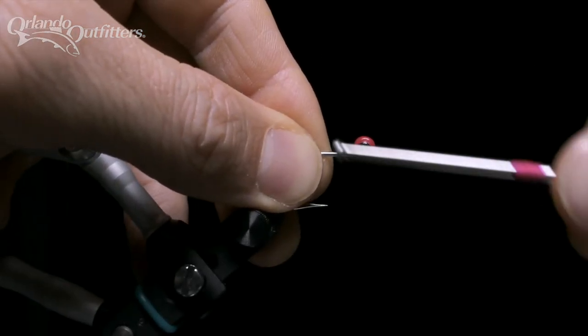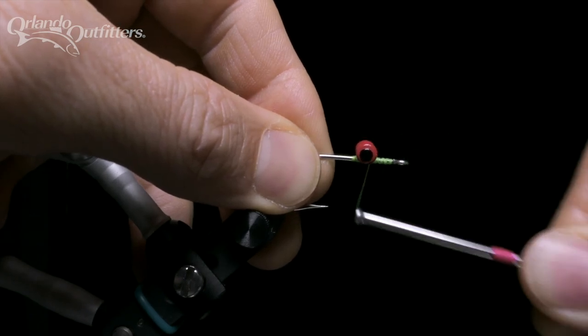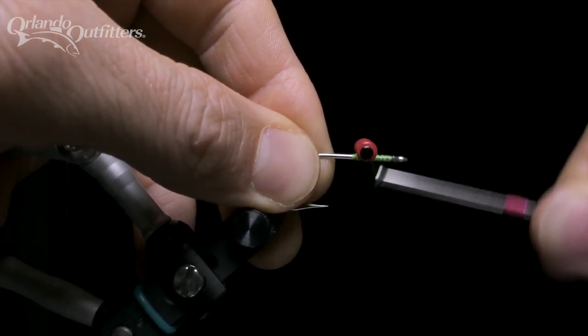I'll do a quick locking wrap and then I'll wrap over the eyeball and under the hook shank. I'll do two of these and then lock.